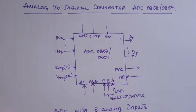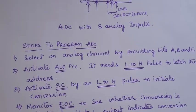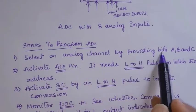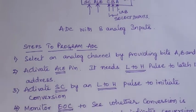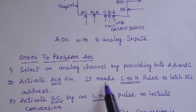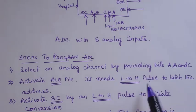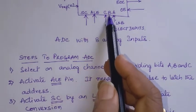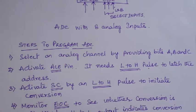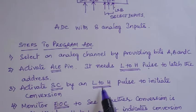This is the working of the ADC. The steps to program it are: Step 1 — select an analog channel by providing bits A, B, C. Step 2 — activate the ALE pin with a low-to-high pulse so that address A, B, C is latched. Step 3 — activate start conversion with a low-to-high pulse to initiate the conversion.